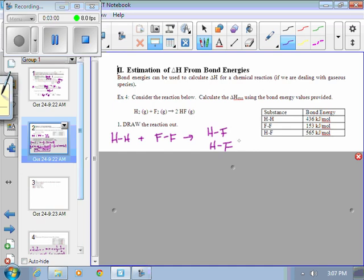First and foremost, bond energy is yet another tool to calculate delta H of reaction. So far, you could use Hess's law to calculate delta H of reaction. You could use heats of formation, products minus reactants to calculate delta H of reaction, or you could use bond energies. So let's do an example. Consider the reaction below. Calculate the delta H of reaction using the bond energies provided. We're reacting hydrogen gas with fluorine gas to make hydrogen fluoride.